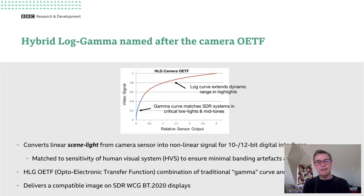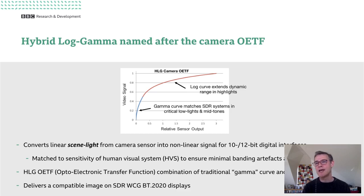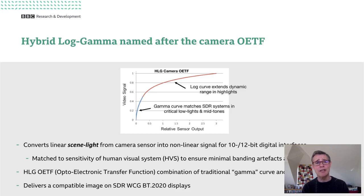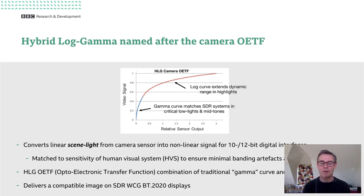Hybrid log gamma gets its name from the camera OETF — that's the opto-optical transfer function — illustrated on the graph on the slide. The job of the OETF is to take the linear scene light signal produced by the camera sensor and convert it into a non-linear signal suitable for 10 or 12-bit digital interfaces, with the curve carefully matched to the sensitivity of the human visual system to minimize banding artifacts after quantization. In the case of HLG, the OETF comprises a traditional gamma curve in the lower part of the signal range, very similar to the curve found in SDR cameras, and a logarithmic curve spliced onto the upper range to extend its capability in the highlights.